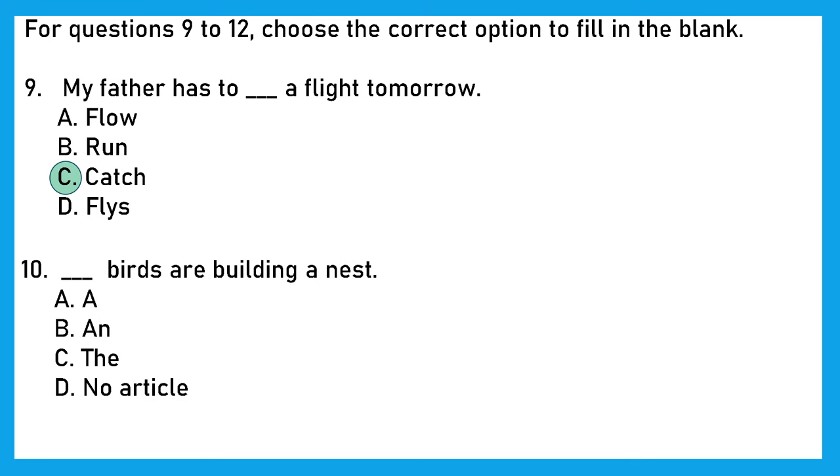Question 10. Blank birds are building a nest. Now here, birds are, is a plural. And we cannot use a, not an, because they are used with singular. The can be the option and that is the right one. Option C is the right option. The birds are building a nest.